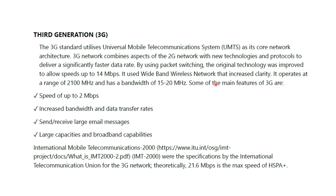3G uses a wideband wireless network that increased clarity, and it operated in the range of 2,100 megahertz with a bandwidth of 15 to 20 megahertz. The main features include speeds up to 2 Mbps, with higher bandwidth and data rates compared to 2G. Large email messages could be sent, and broadband capabilities were large.